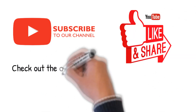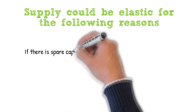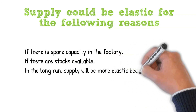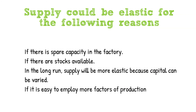Supply could be elastic for the following reasons: if there is spare capacity in the factory, we can increase production; if there are stocks available, we can sell surplus stocks. In the long run, supply will be more elastic because capital can be varied — we can build new factories or buy new equipment. It may also be easy to employ more factors of production, for example finding more skilled staff.